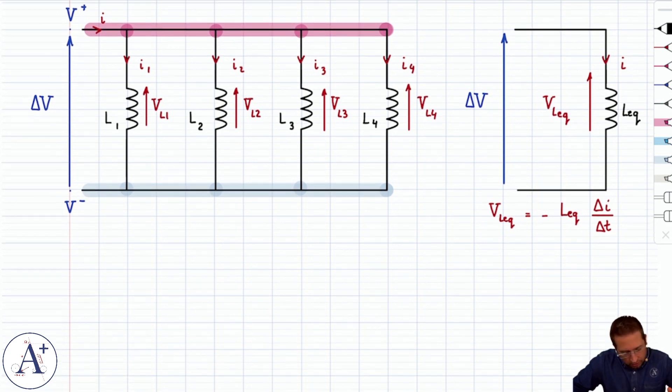Now to do this, we're actually going to start with the node law, and we're going to write that I is equal to I1 plus I2 plus I3 plus I4. It has to be true. The current I splits into four different currents.